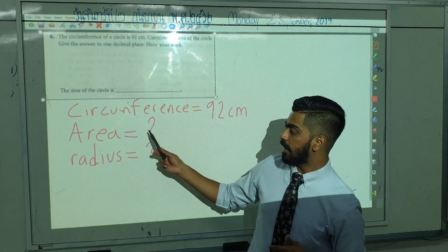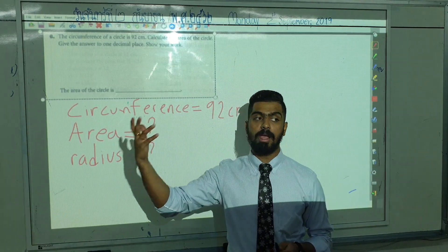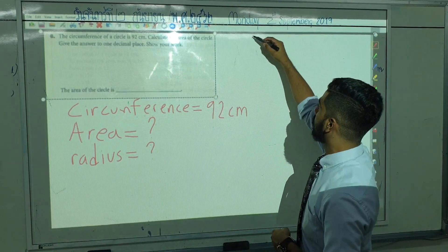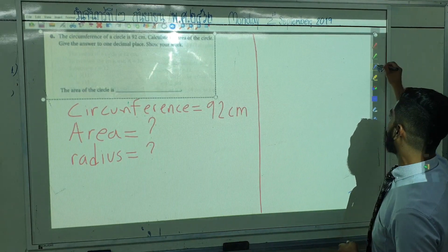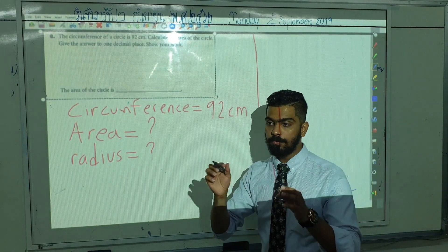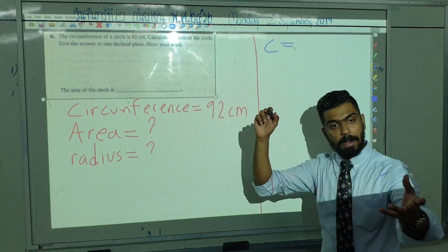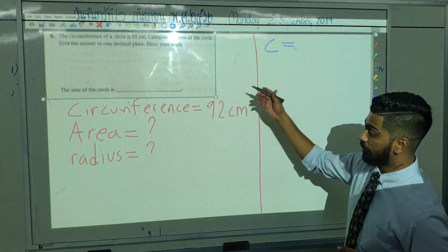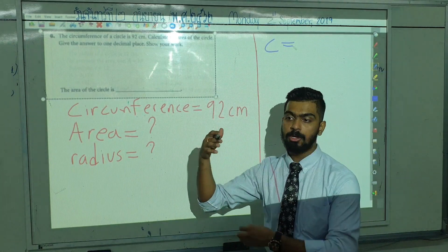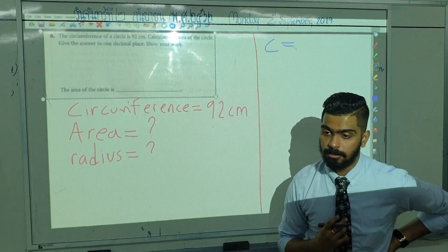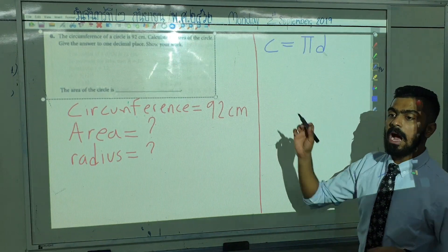So in order to find the area of the circle we need to know the radius, but how can we find the radius? We know the circumference. What is the formula for circumference? C = 2πr, or C = πd. Since we need the diameter first, let's use πd.